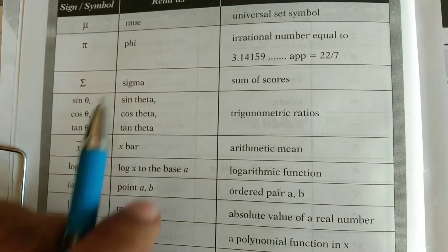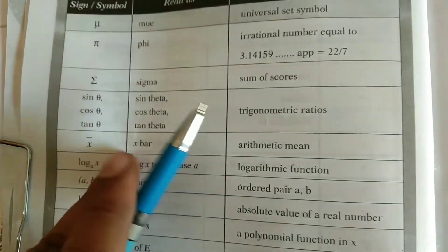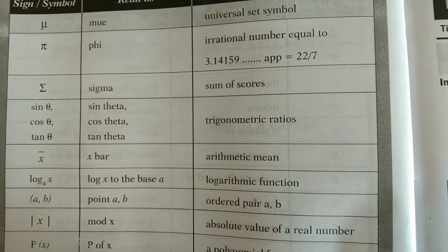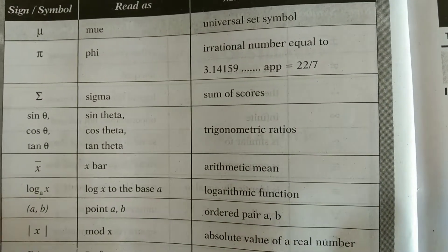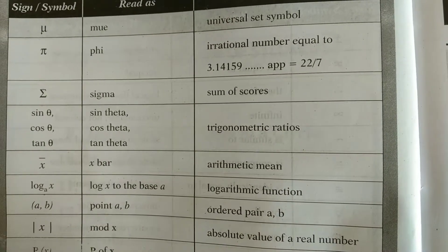And then mu, universal set symbol. Then pi, which is an irrational number, equivalent to three point one four one five nine. Or else, we can also call it as twenty two by seven.